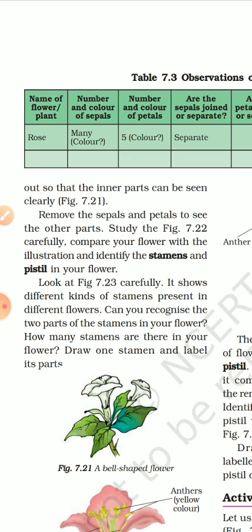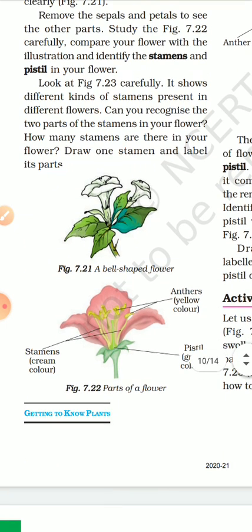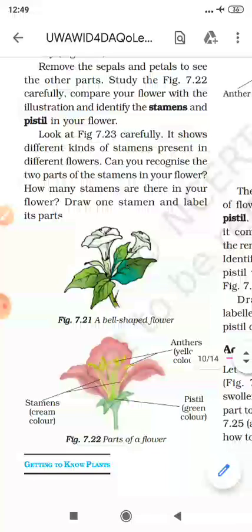Now what we have to do is a little bit of dissection. Dissection means going inside the flower to check what's inside. Remove the sepals and petals to see the other parts. Study figure 7.22 carefully.